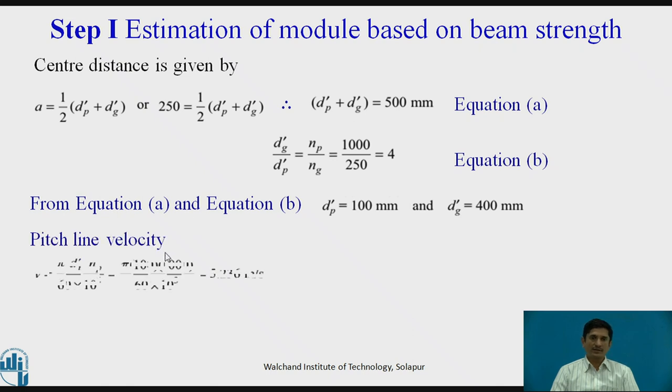Now the pitch line velocity. V equals pi d dash np upon 60 into 10 to the power 3. V equals 5.236. Why we have calculated the velocity, the pitch line velocity? We need to calculate the velocity factor CV. CV equals 3 upon 3 plus V by the Barth equation. That equals 0.3643.